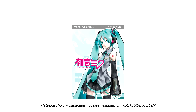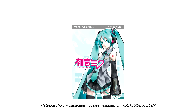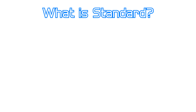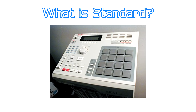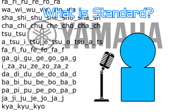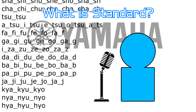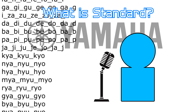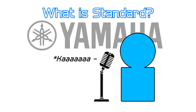First things first, before AI became commonplace, most vocal synthesizers used a method known as concatenative, which is commonly known among the community as just standard. Standard voice banks can pretty much be described as working similarly to a sampler. A team brings in a voice provider and has them record a very structured and deliberate script of phonetics based on the language they want their vocalist to support. These samples are very enunciated and very flat in order to give the cleanest possible audio for the end user to work with.